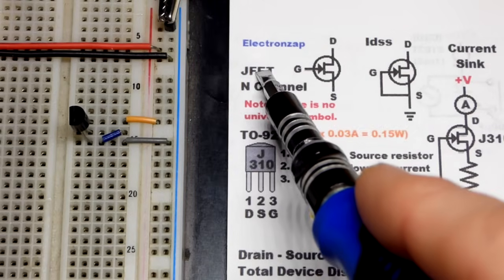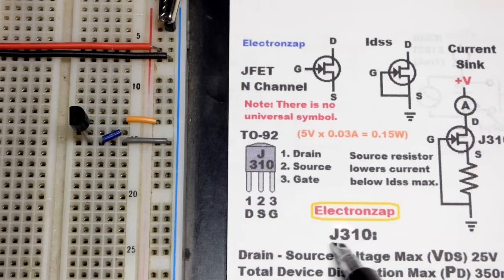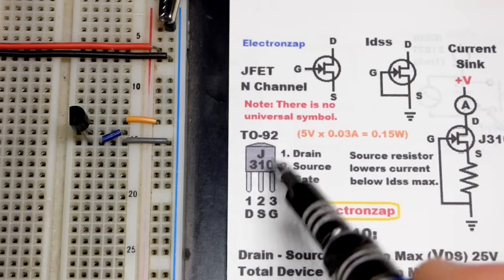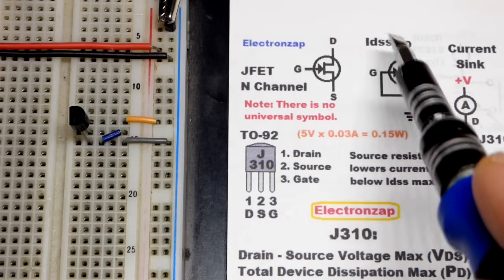So now, the JFET. We're going to use the N-channel JFET, the J310 down there. This is the pin layout. We have it on the board. We have it wired so that we can look at its IDSS.